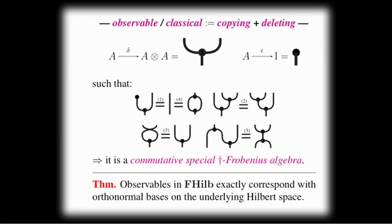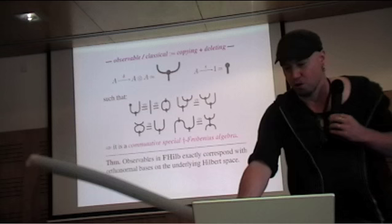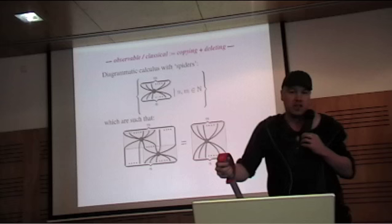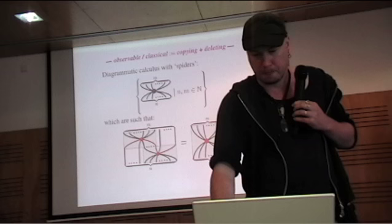So my time is going very quick. One of the nice things, the math behind this is quite substantial. This weird set of rules turns out to be exactly the same as the existence of a bunch of what we call spiders, processes with N inputs and N outputs, which are such that if two spiders meet, they sort of join. So this is for us what an observable is.